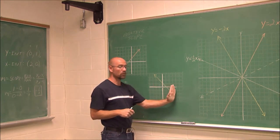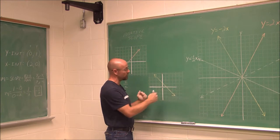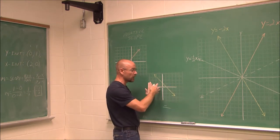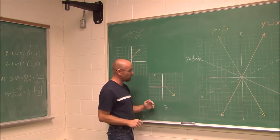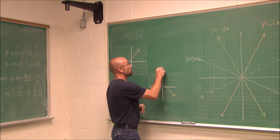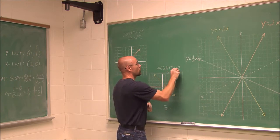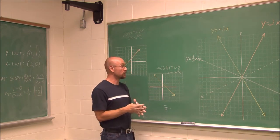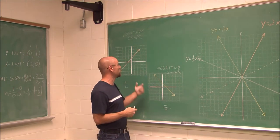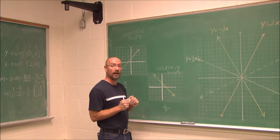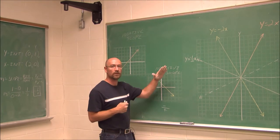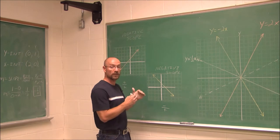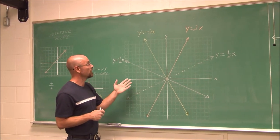If we assess a graph from left to right and it's going down, that's negative in the y direction over positive in the x — a negative over a positive. We call that a decreasing slope, or a negative slope. Numerically, the coefficient in front of x will either be positive or negative. When we see that sign, we should know that a positive slope means the line increases from left to right, and a negative slope means it decreases.